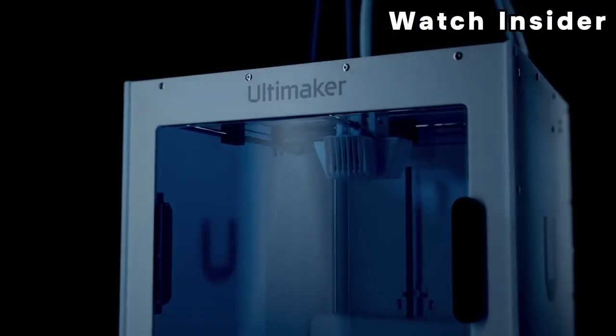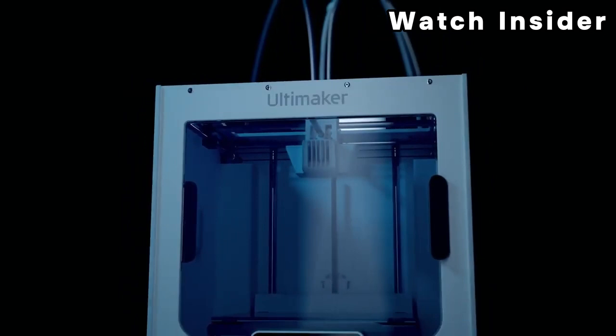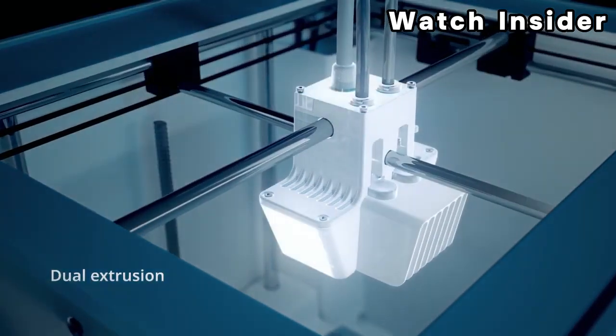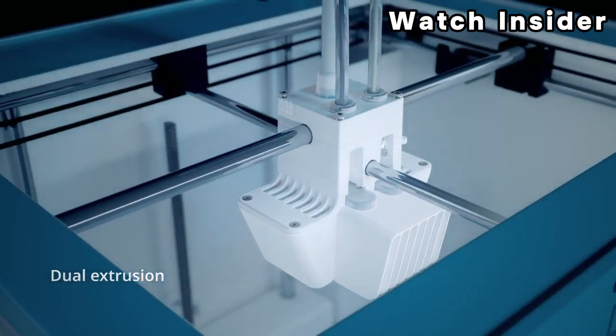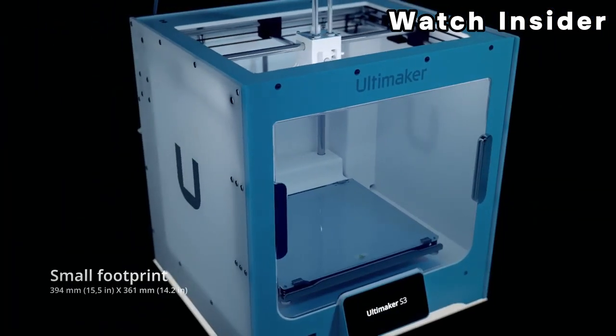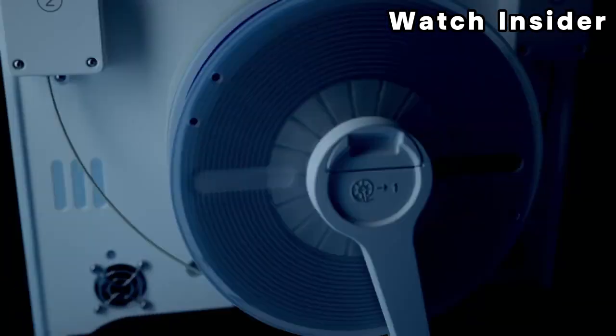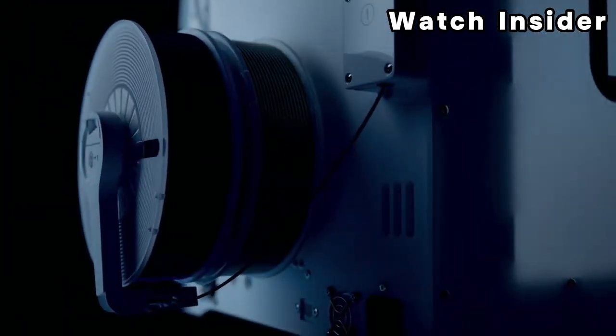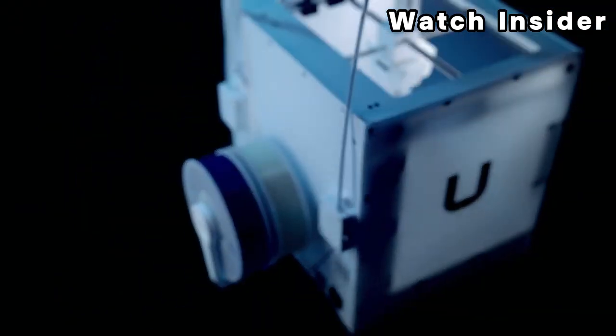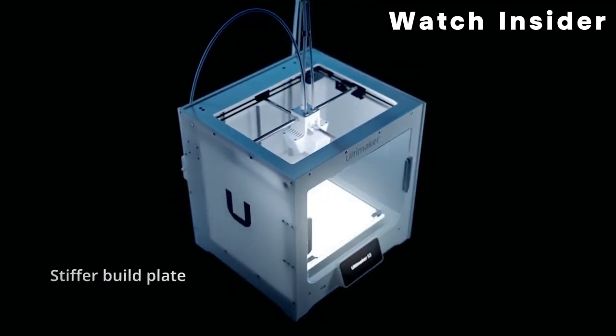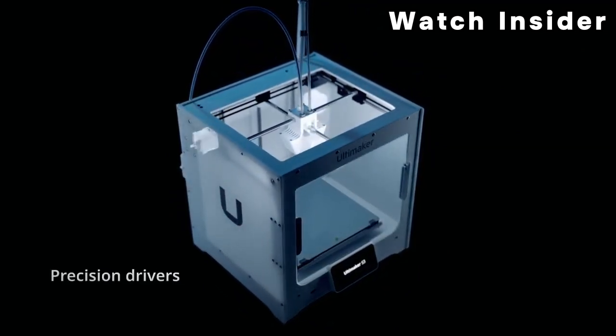Number two: Ultimaker S3 3D Printer. The Ultimaker S3 features dual extrusion capabilities, allowing users to print with two different materials or colors simultaneously. This enables the creation of complex geometries, support structures, and multi-material parts. Despite its compact footprint, the Ultimaker S3 offers a generous build volume, providing ample space for printing large parts or multiple smaller objects in a single print job.